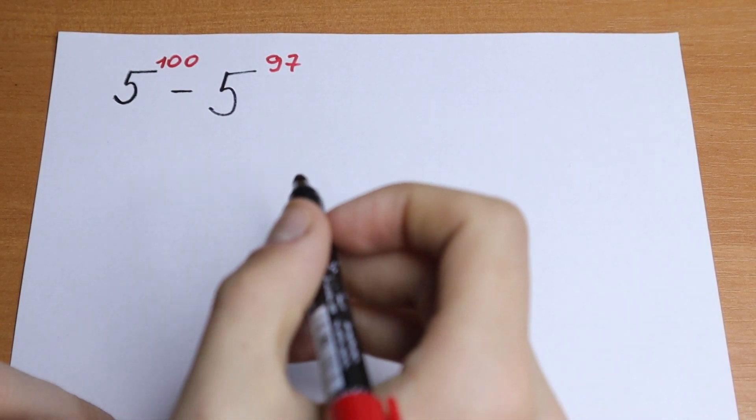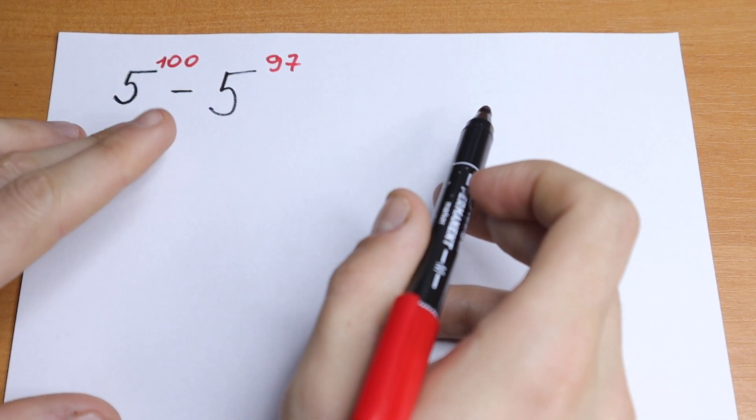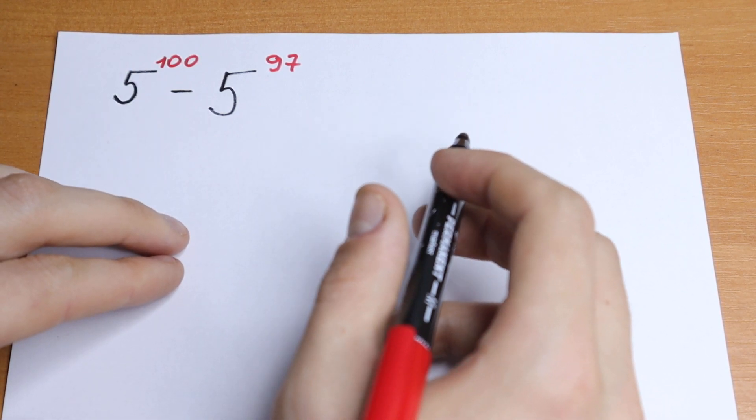Hello everyone, welcome back to Mathmoon. Today we have an interesting algebra problem with powers: 5 to the power 100 minus 5 to the power 97. How can you solve it?